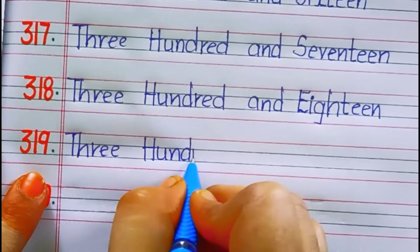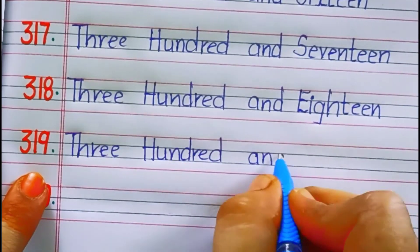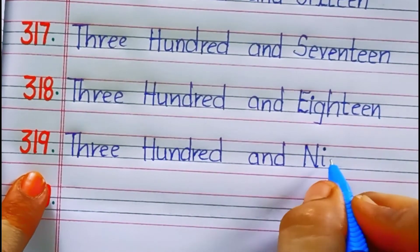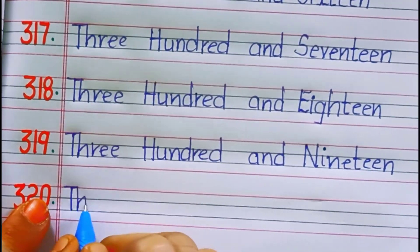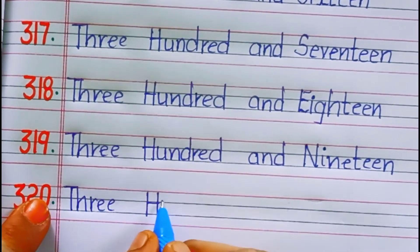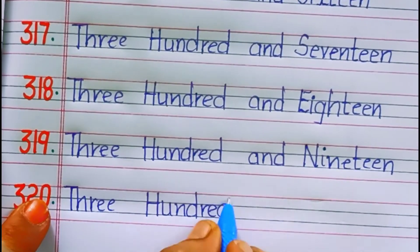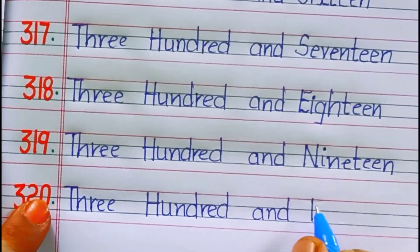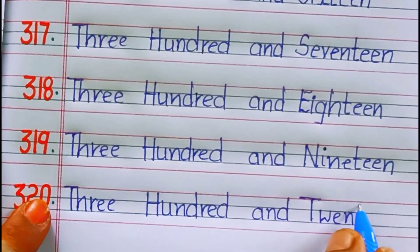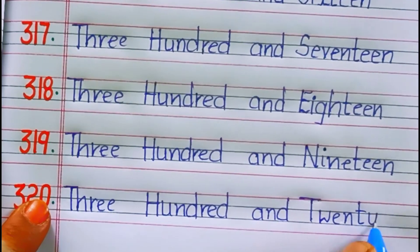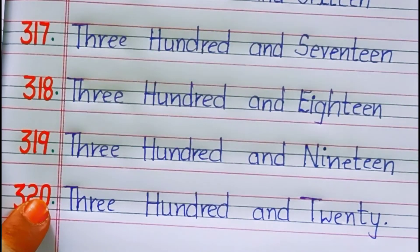Three hundred and eighteen. E-I-G-H-T-E-E-N, eighteen. Three hundred and nineteen. N-I-N-E-T-E-E-N, nineteen. Three hundred and twenty. T-W-E-N-T-Y, twenty.